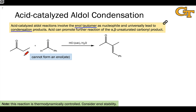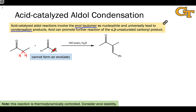Now let's look at our first example of what we might call a mixed or crossed aldol reaction between two different aldehyde or ketone reaction partners. One has two saturated alpha carbons with multiple alpha hydrogens on each, but the other lacks hydrogens connected to its alpha carbons.